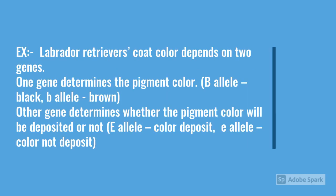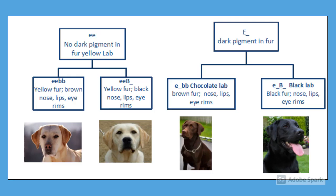As an example, Labrador retriever coat color depends on two genes. One gene determines the pigment color: the capital B allele produces black, and the lowercase b allele produces brown. The other gene determines whether the pigment color will be deposited or not: the capital E allele allows color deposit, and the lowercase e allele means color is not deposited. This chart shows how Labrador retrievers receive their coat color due to the interaction between these two genes.